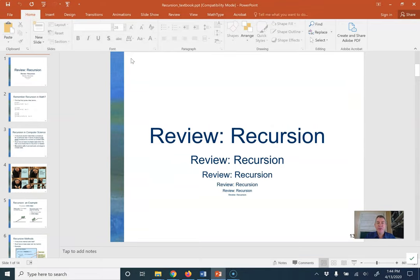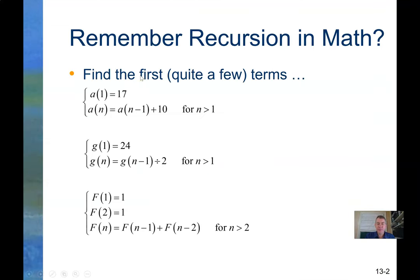First off, you do remember some recursion stuff from math, I'm sure. Find the first few terms of these sequences. Each term is the previous term plus 10. Start at 17. So that's easy. That's 17, 27, 37, and so on. Here, the first term is 24. And each term after that is the previous term divided by 2. 24, 12, 6, etc.